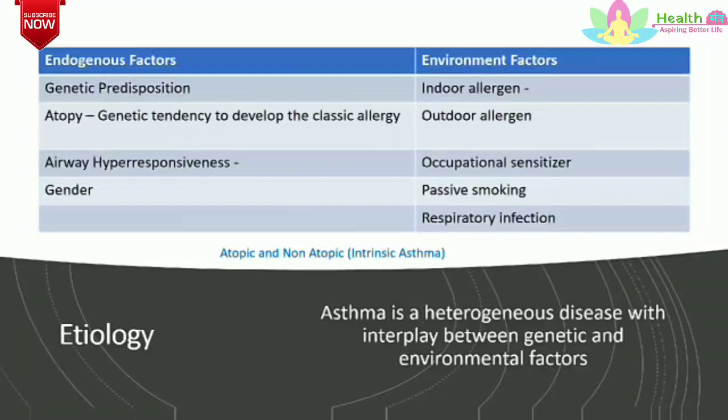Atopy is a major risk factor for asthma, and non-atopic individuals have a very low risk of developing asthma. Patients with asthma commonly suffer from other atopic diseases like allergic rhinitis and atopic dermatitis. Atopy is due to genetically determined production of specific IgE antibody, and patients may have a family history of allergic disease.